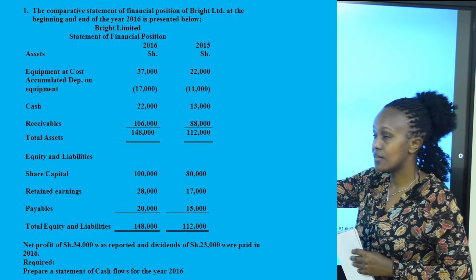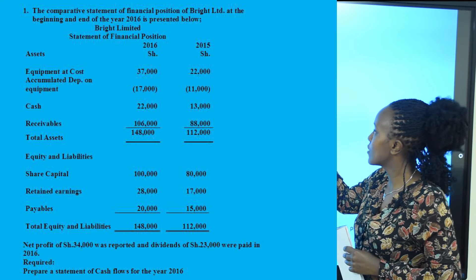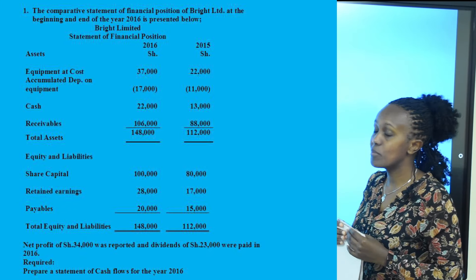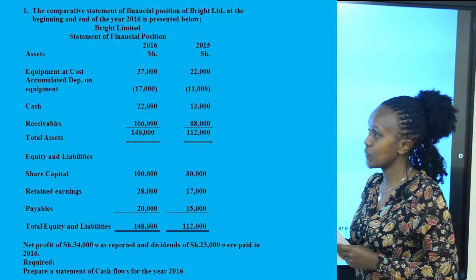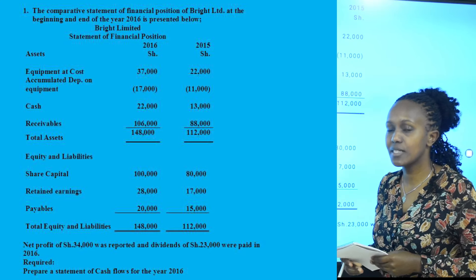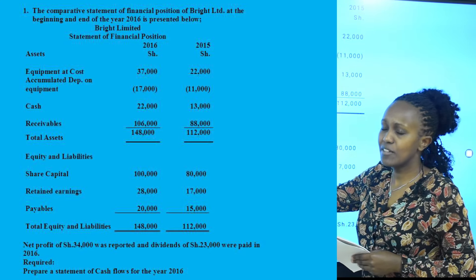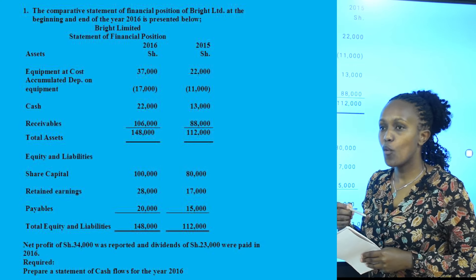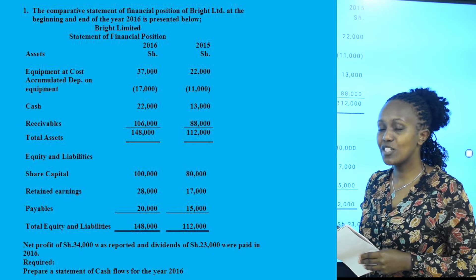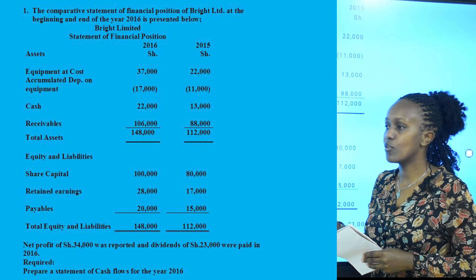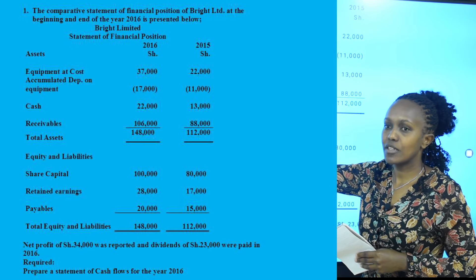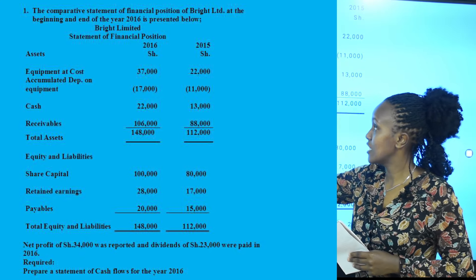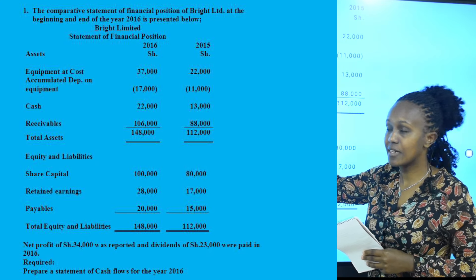We have receivables increasing from 88,000 to 106,000 — a difference of 18,000. Receivables are a current asset and therefore represent operating activities. Receivables arise from sales on credit — when you sell on credit to customers and they have not paid, they are called receivables. Sales is a normal operating activity of the business, which is why changes in receivables fall under operating activities.